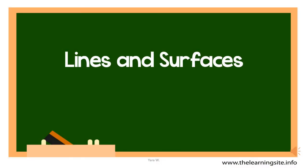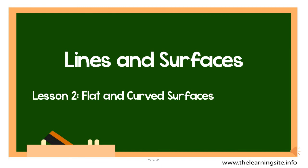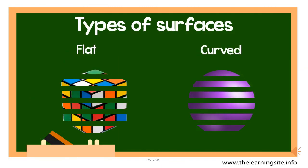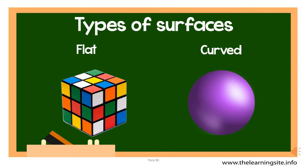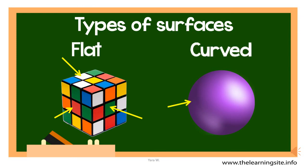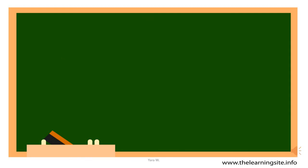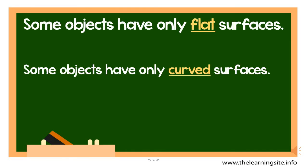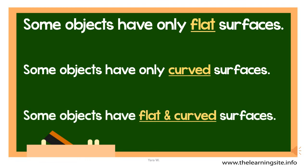Dear grade 2 students, this is the chapter about lines and surfaces. In this lesson we will continue talking about flat and curved surfaces. In the previous lesson we discussed the types of surfaces an object could have — it could either be flat or curved. We also said that objects can have only flat, only curved, or both flat and curved surfaces.